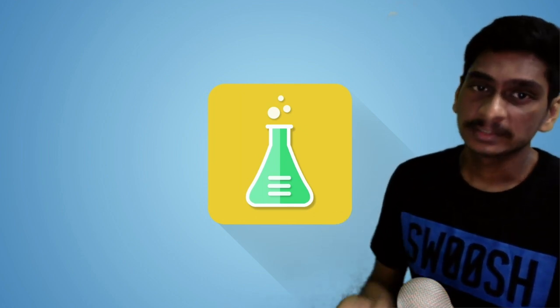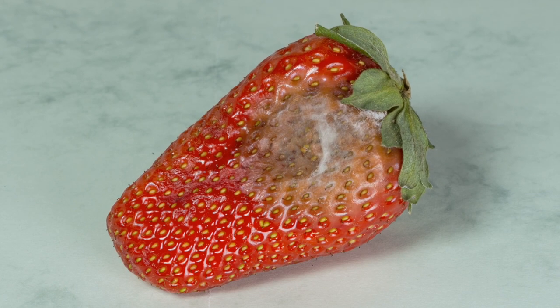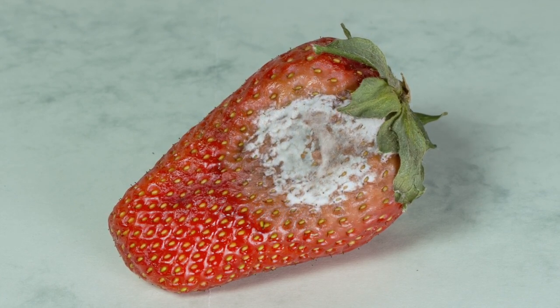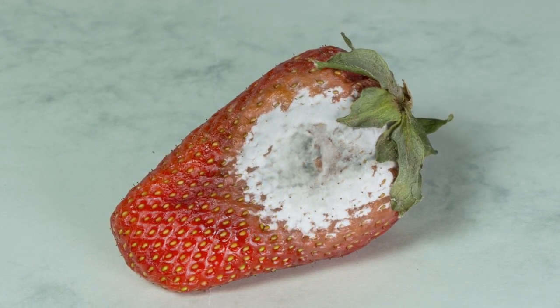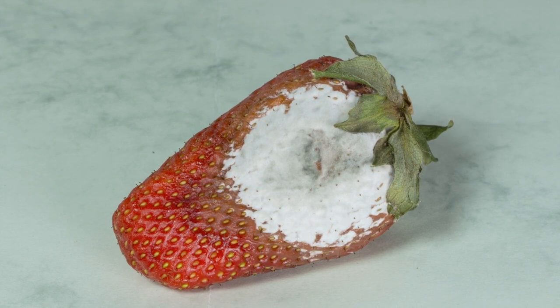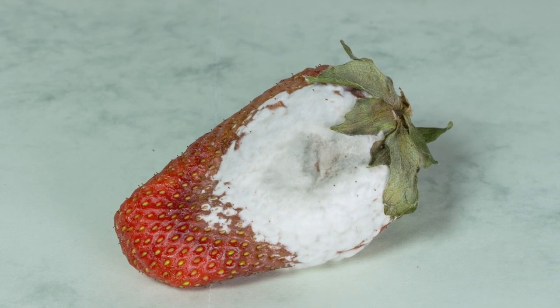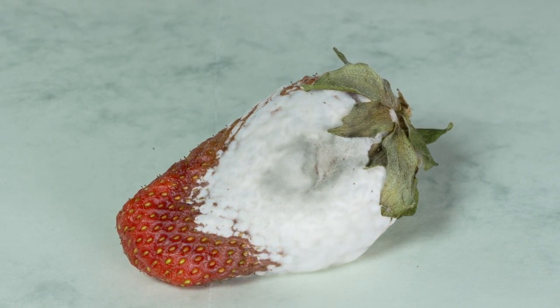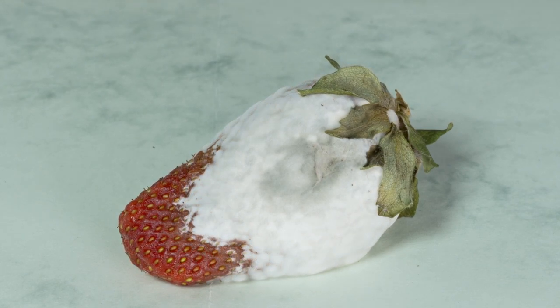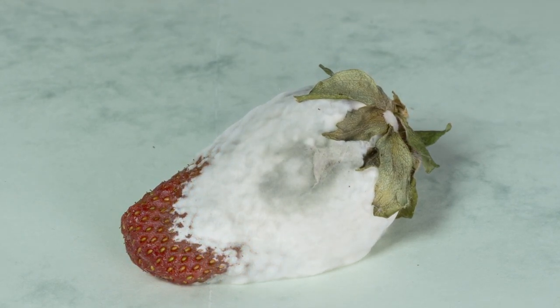The microorganisms that grow on our food produce toxic substances sometimes. This is why it is important to preserve food when you want to consume it over a period of time. The chemical method is to add preservatives like sodium benzoate and sodium metabisulfate.